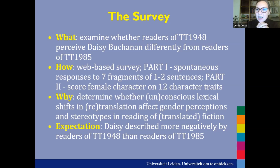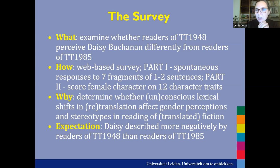For the second part, we gave them the seven fragments again, but now asked them to score Daisy Buchanan on twelve characteristics — such as sincere, helpless, manipulative, and confident — on a Likert scale from one ('I don't think she has this characteristic at all') to five ('I think she really has this characteristic'). We wanted to see if the very subtle lexical differences between the two translations influenced how people reacted spontaneously and then scored Daisy's characteristics.